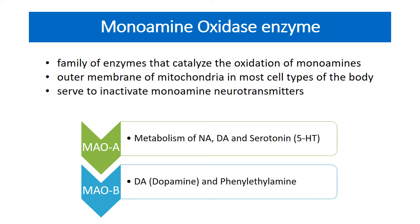Monoamine oxidase enzymes are of two types: MAO-A and MAO-B. MAO-A shows the metabolism of noradrenaline, dopamine, and serotonin (5-hydroxytryptamine). Whereas MAO-B shows the metabolism of dopamine and phenylethylamine.